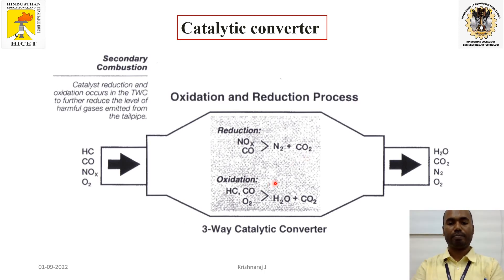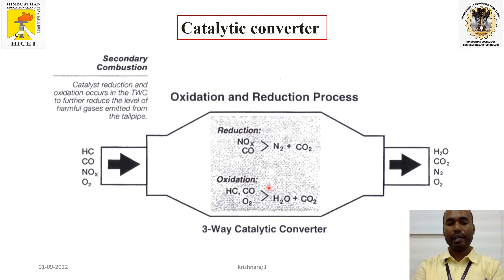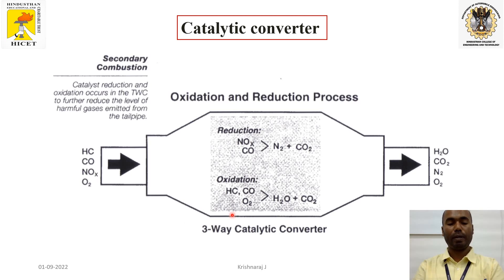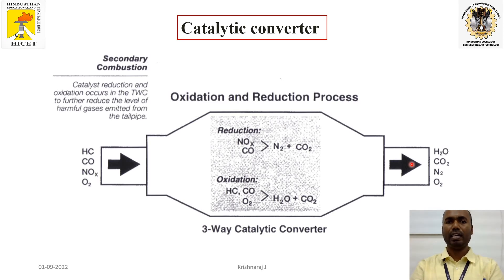In the oxidation catalyst, HC emissions containing hydrogen and carbon are processed. The oxidation catalyst has the property to disseminate oxygen content. CO reacts with the oxidation catalyst and is formed into CO2. The remaining gases containing hydrogen react at temperatures above 600 degrees Celsius and are formed into H2O (water). So the harmful gases — unburned hydrocarbon, carbon monoxide, and nitrogen oxides — are converted into carbon dioxide, nitrogen, oxygen, and water.